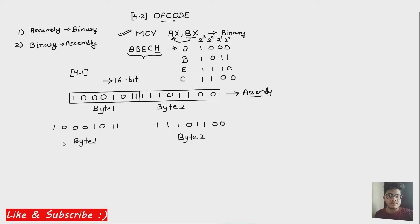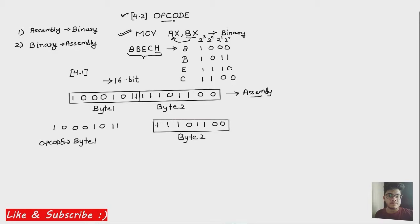We know that byte one represents the opcode, which is basically the topic of this tutorial 4.2 on opcode. Byte two represents the mod register and register slash memory field. We are going to draw some neat rectangles around this because we will have to analyze each and every bit, since each bit in this instruction gives us some information about how you can convert it into assembly. This is the binary code and we have to convert it into assembly code — always remember the objective of the question.